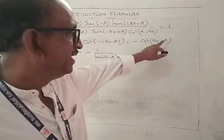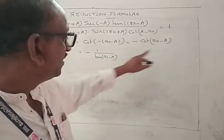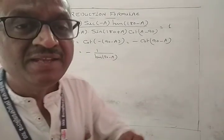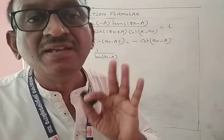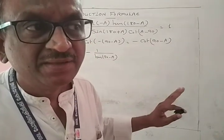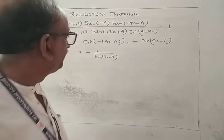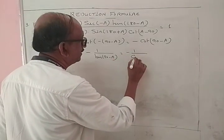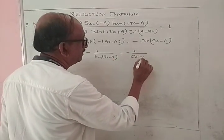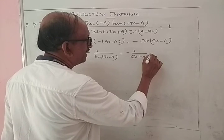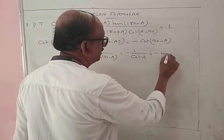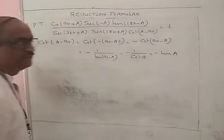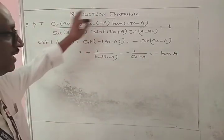cot(90 - A) = 1/tan(90 - A). tan(90 - A) is a standard result equal to cot A. Therefore, minus 1/tan = minus tan A... then take the left hand side.